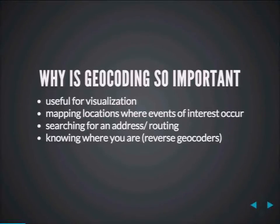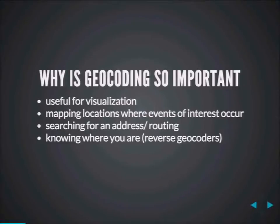Reverse geocoding is crucial — knowing where you are if you're in a foreign country and trying to communicate with other people. You can't just say 'I'm at minus 121.7, 62.3.' No one talks like that, so you need to know what neighborhood you're in, and that's where reverse geocoding comes into play.